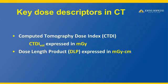When you talk about CT dose, the key dose descriptors in CT are the CT dose index, called the computed tomography dose index, and the dose length product. These two are now available at the scanner even before the scan is done, and also available after the scan is done as the dose report.